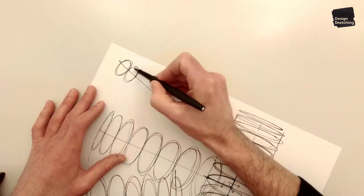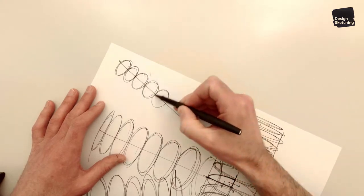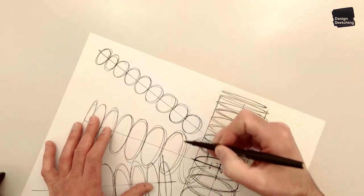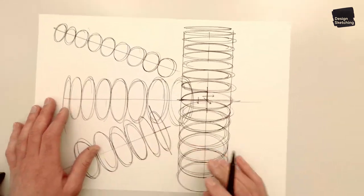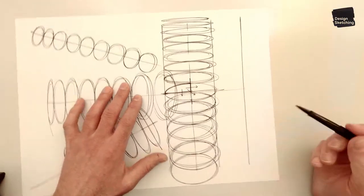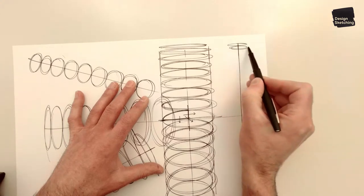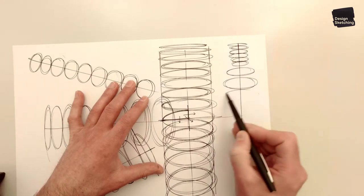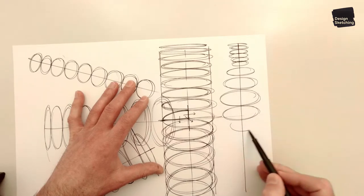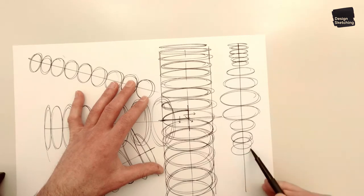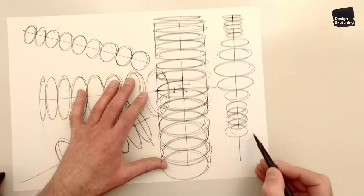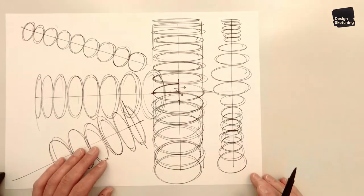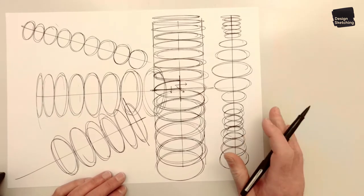Let's do some smaller ones. All the way up to full circle and maybe another set here. And let's vary the width. All right, so fill a couple of pages with these ellipses. It will really help with the next exercise.